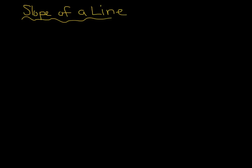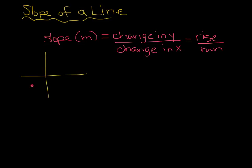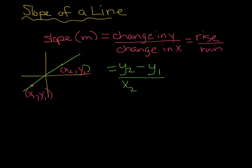We'll start with the slope of a line. The slope, which we also refer to using the letter M, is going to be the change in Y over the change in X. You might have also heard it called rise over run. So if you have two points — I'm going to call this one X1, Y1, and this one X2, Y2 — and we draw a line through them, we use the formula Y2 minus Y1 over X2 minus X1.